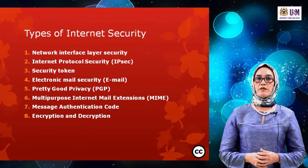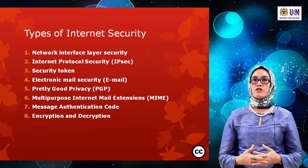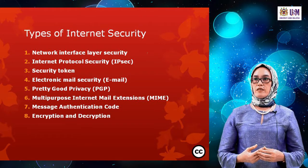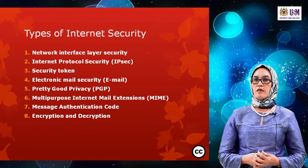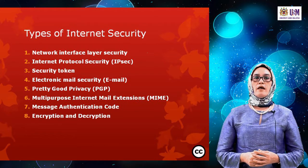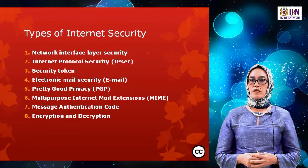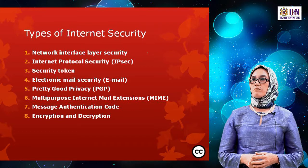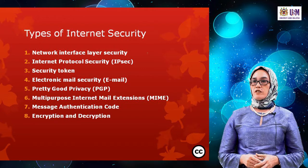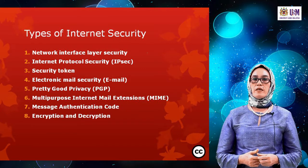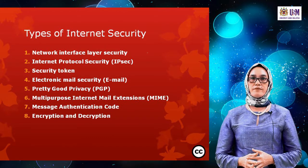Now I will talk about the types of internet security. There are eight types I am going to introduce: number one, network interface layer security; number two, internet protocol security or IPsec; number three, security token; number four, electronic mail security; number five, pretty good privacy; number six, multi-purpose internet mail extension; number seven, message authentication code; and number eight, encryption and decryption.